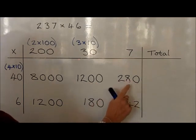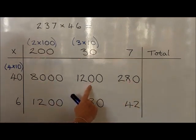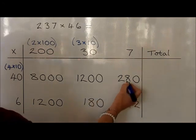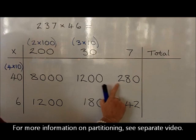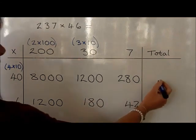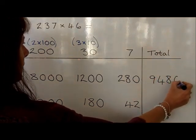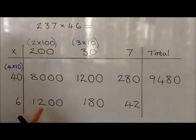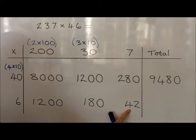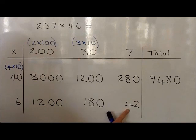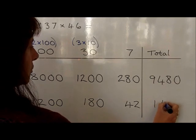We can now add up the first row: 8,000 plus 1,200 is 9,200, plus 280 — partitioning 280 into 200 and 80 — so 9,200 plus 200 is 9,400, plus another 80 is 9,480. We can now add the bottom row: 1,200 plus 180 — partitioning into 100 and 80 — so 1,200 plus 100 is 1,300, plus 80 is 1,380. Then adding 42, partitioned into 40 and 2: 1,380 plus 40 is 1,420, plus another 2 is 1,422.